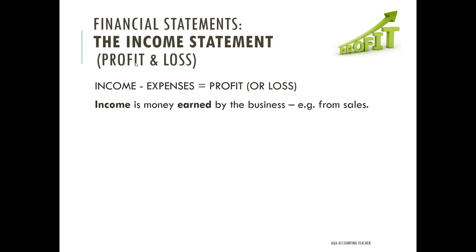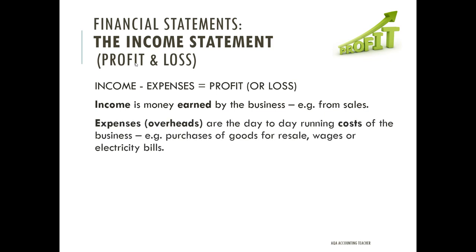Income is money that the business has earned — usually from sales, but it might include interest on bank deposits or rent received from premises. It doesn't include things like money paid in by the owner or money borrowed from a bank, as those are categorised differently. Expenses are the overheads and day-to-day running costs of the business — things like purchases of goods for resale, wages, electricity bills, rent, motor running costs, and insurance.